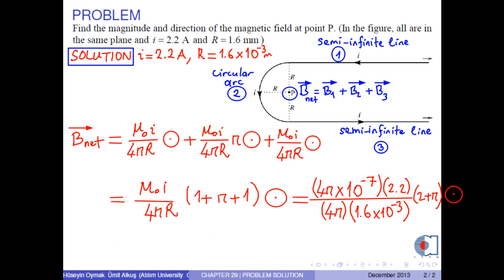As a result, the magnetic field at point P is found as 7.07 times 10 to negative 4 tesla, which is out of the screen.